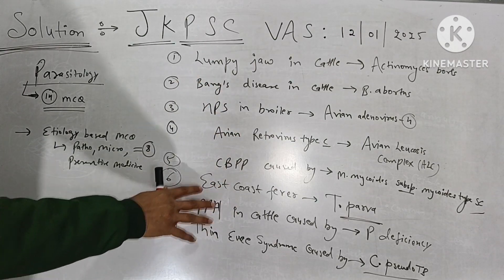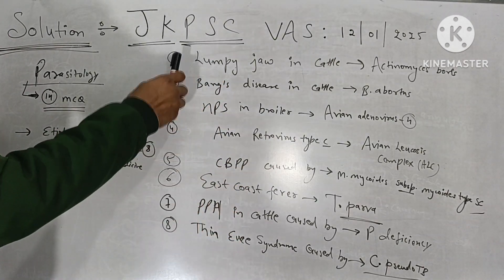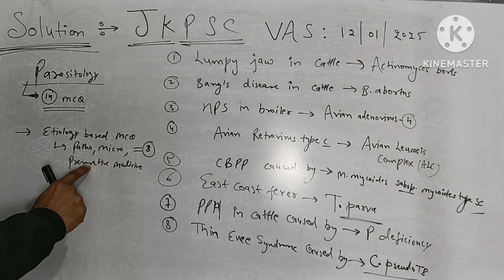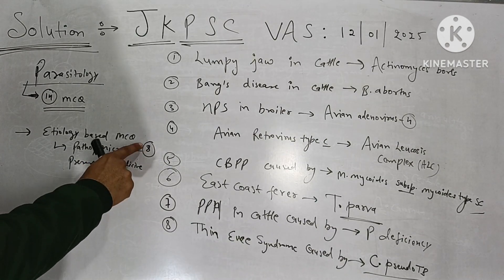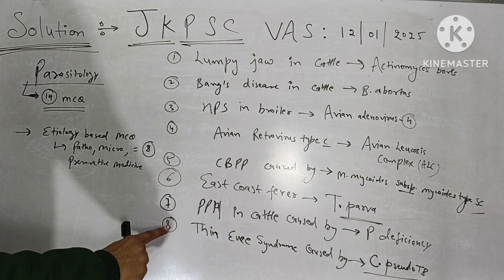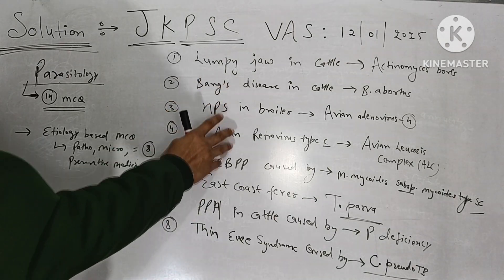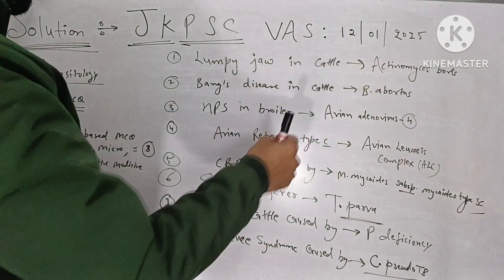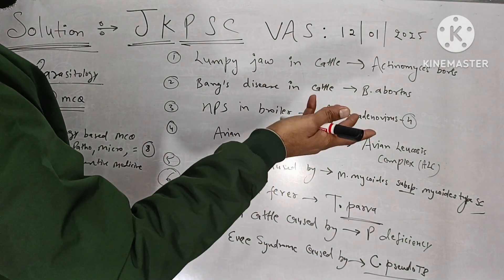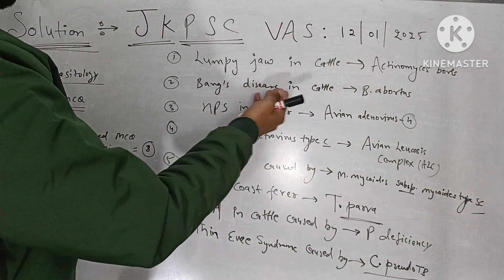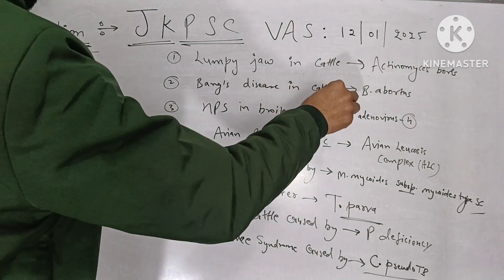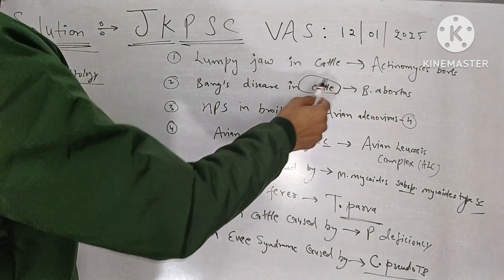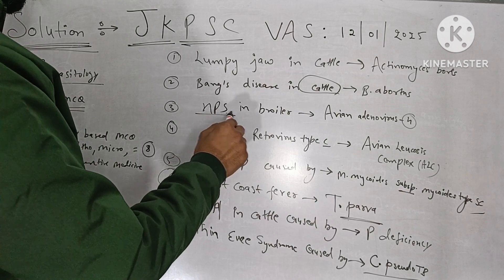After parasitology, there are some etiology-based MCQs from the sections of pathology, microbiology, and preventive medicine — total eight MCQs, all simply etiology-based. Lumpy jaw in cattle is Actinomyces bovis, wooden tongue is actinobacillosis, Bangs disease is Brucella abortus in cattle, and hydropericardium syndrome in broilers is avian adenovirus type 4.